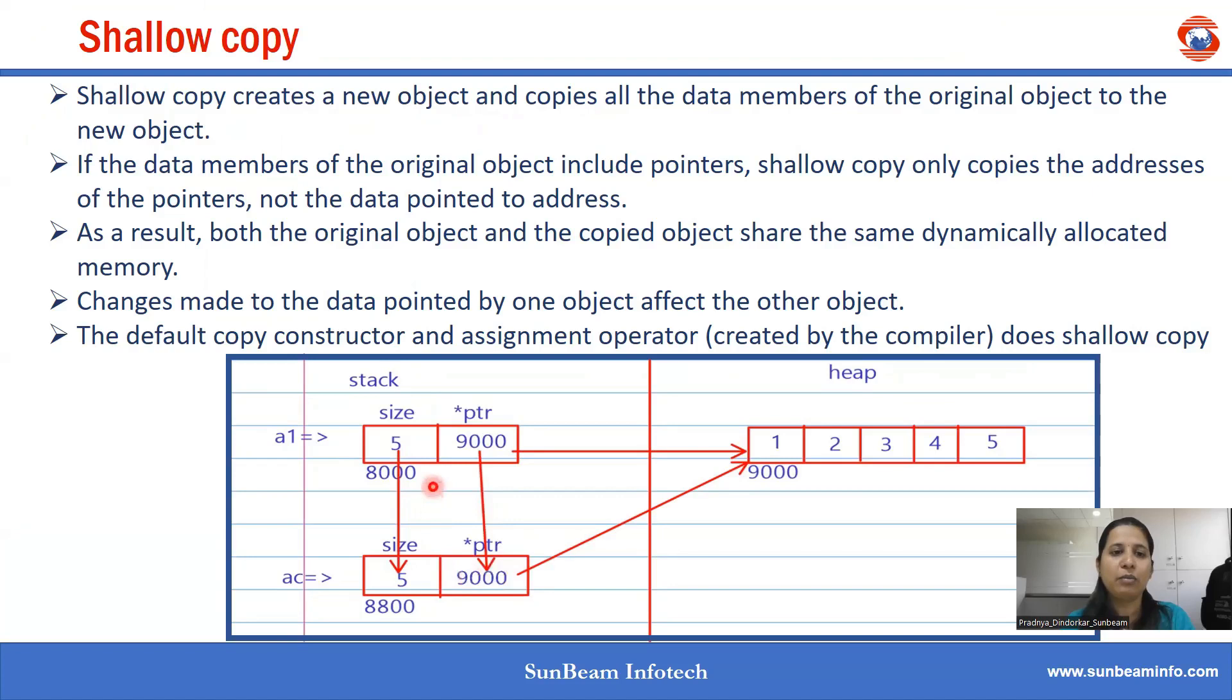If the data members of the original object include pointers, shallow copy only copies the address of the pointer, not the data pointed by that address.